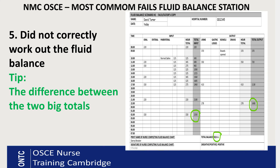The fifth common fail is not correctly working out the fluid balance. If that number is not correct, it will be a fail. The balance is the difference between the two big cumulative totals — the total input and the total output. As shown on the chart, you subtract the smaller number from the bigger one to get your balance, for example 922ml difference between those two totals.